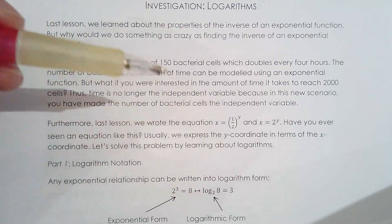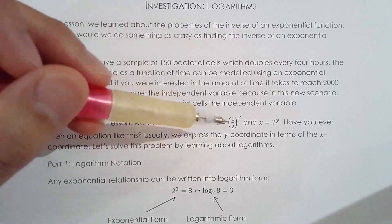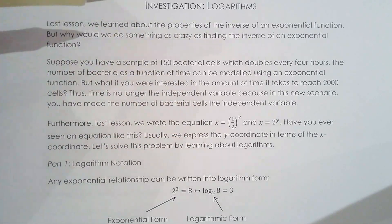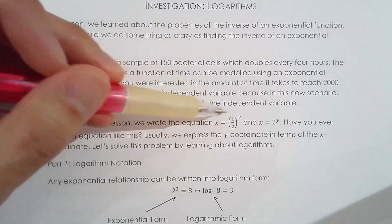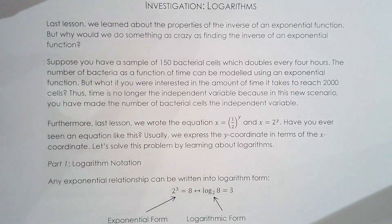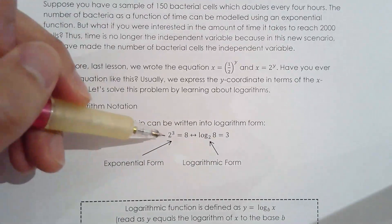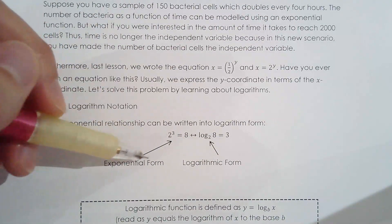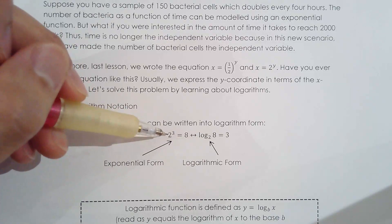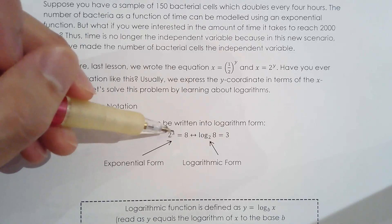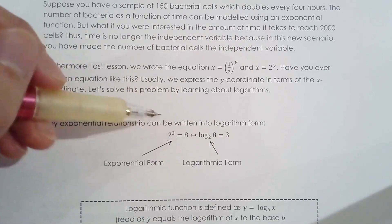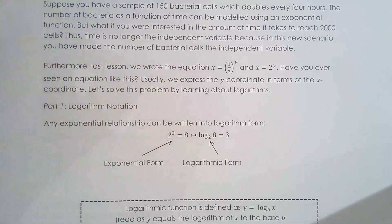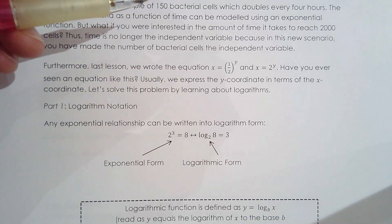It's very important — the idea that we held previously has not changed. We're still working with the inverse of an exponential function, which is a logarithmic function. So we have 2 cubed equals 8. This is exponential form. The power consists of two parts: you have the base of the power, which is 2, and the exponent, which is 3. And of course, 2 cubed equals 8 because 2 times 2 times 2 is 8.